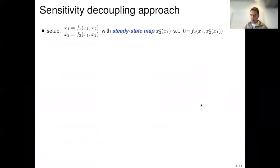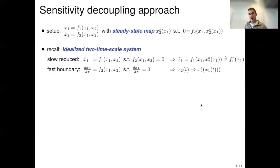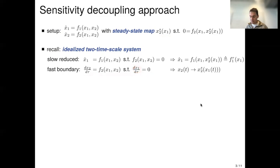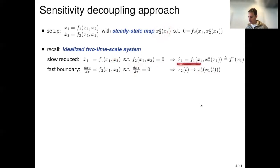The approach is the sensitivity decoupling method. The setup is two interconnected systems with states x1 and x2. If the second system is at equilibrium — zero equals f2 — we assume there is an explicit map x2s as a function of x1 characterizing the steady state. For the ideal two-timescale system: the fast boundary layer system, with x1 frozen, has stability properties ensuring x2(t) converges to x2s(x1). For the slow reduced dynamics, we plug in the steady state map x2s and the dynamics become x1-dot equals f1(x1, x2s(x1)), which I'll call f1r (reduced).